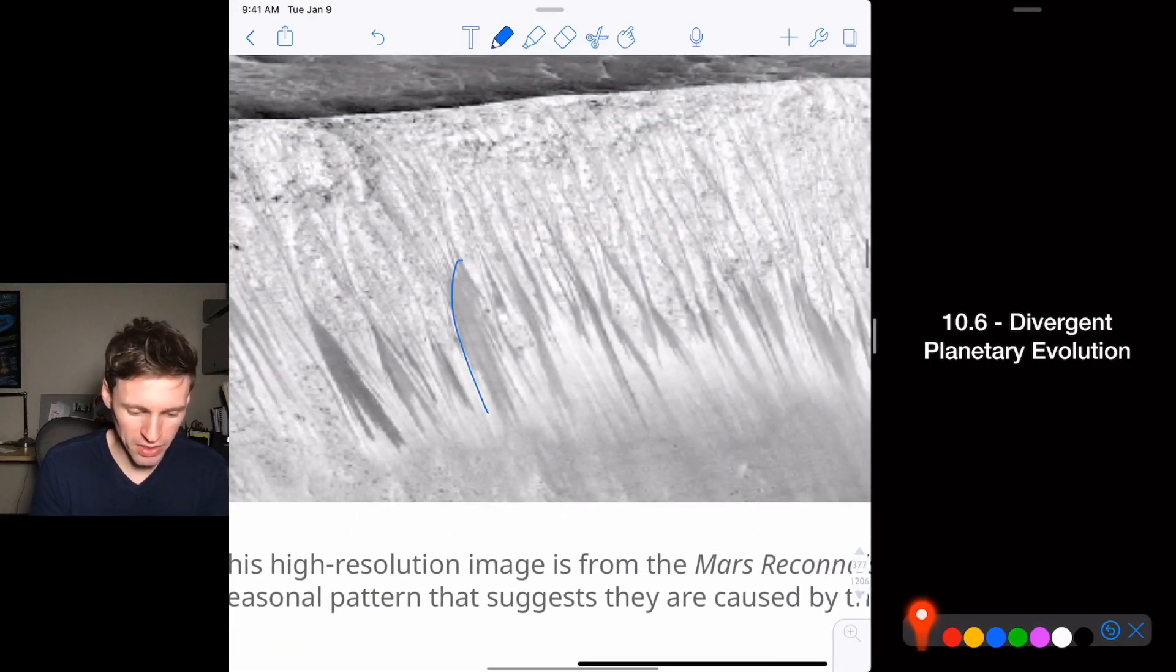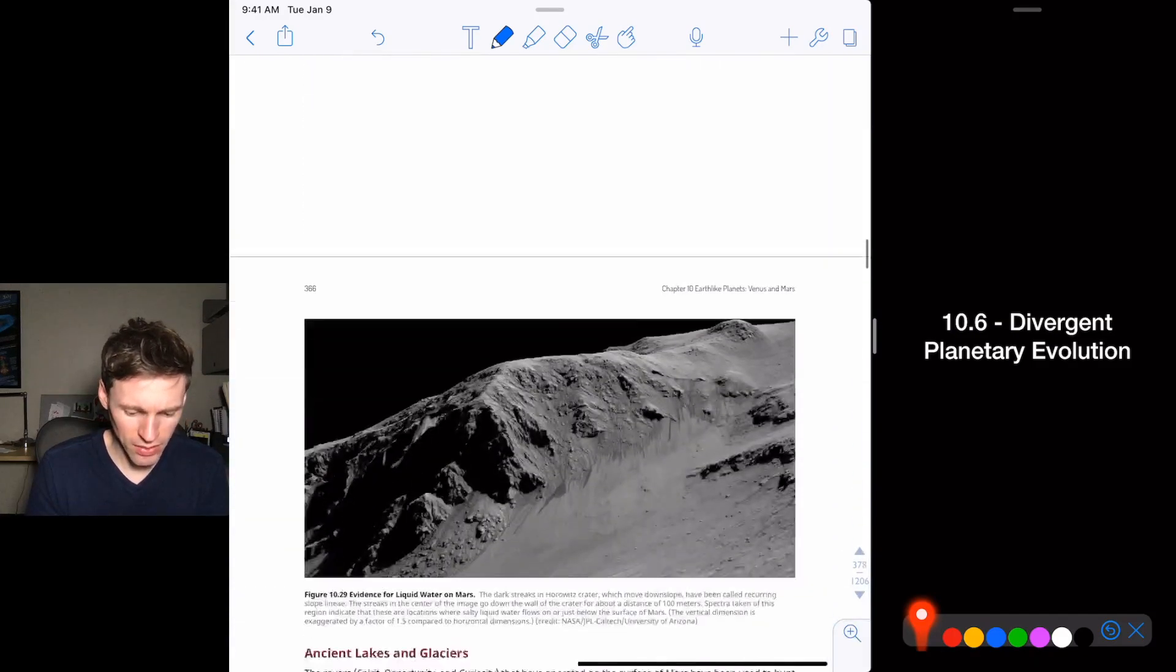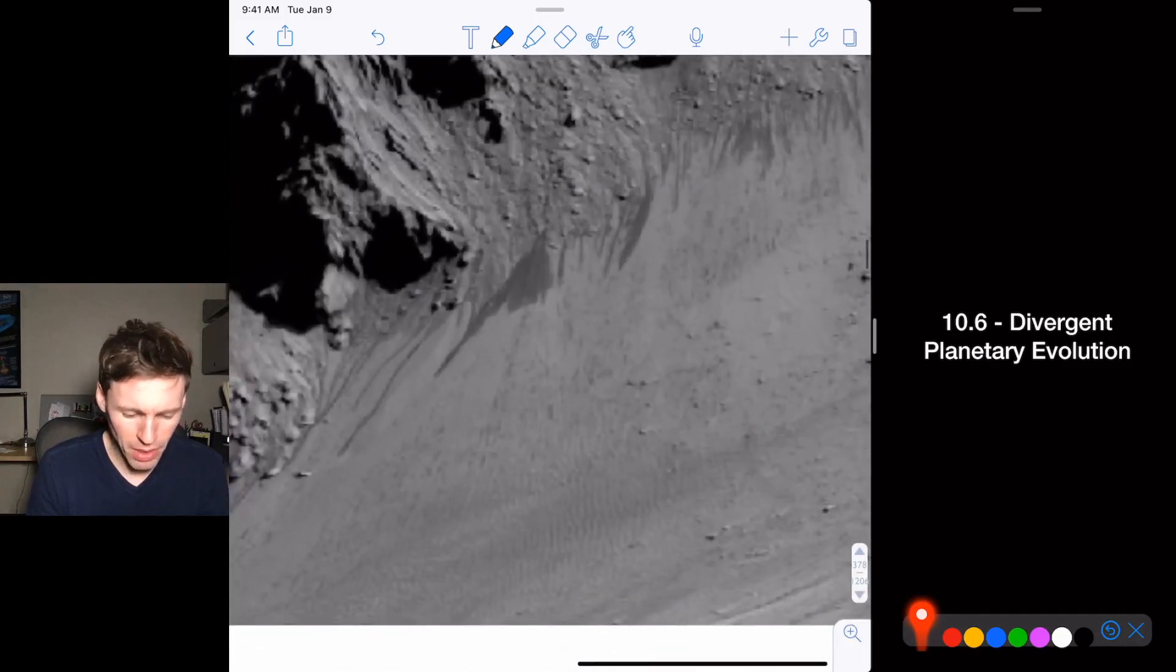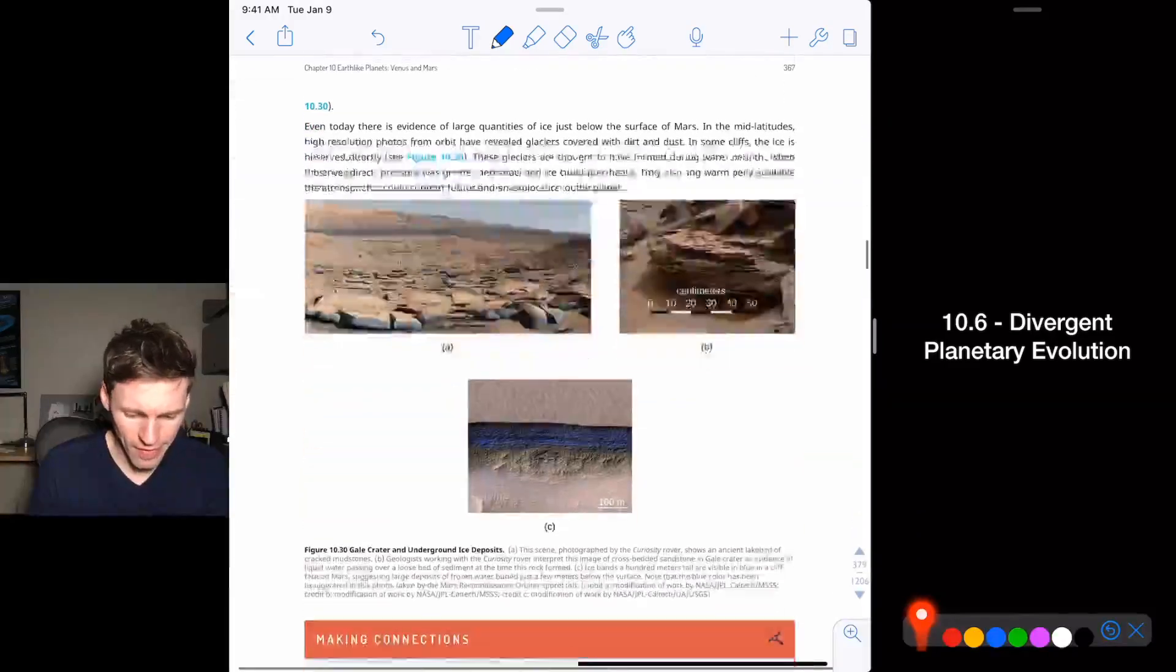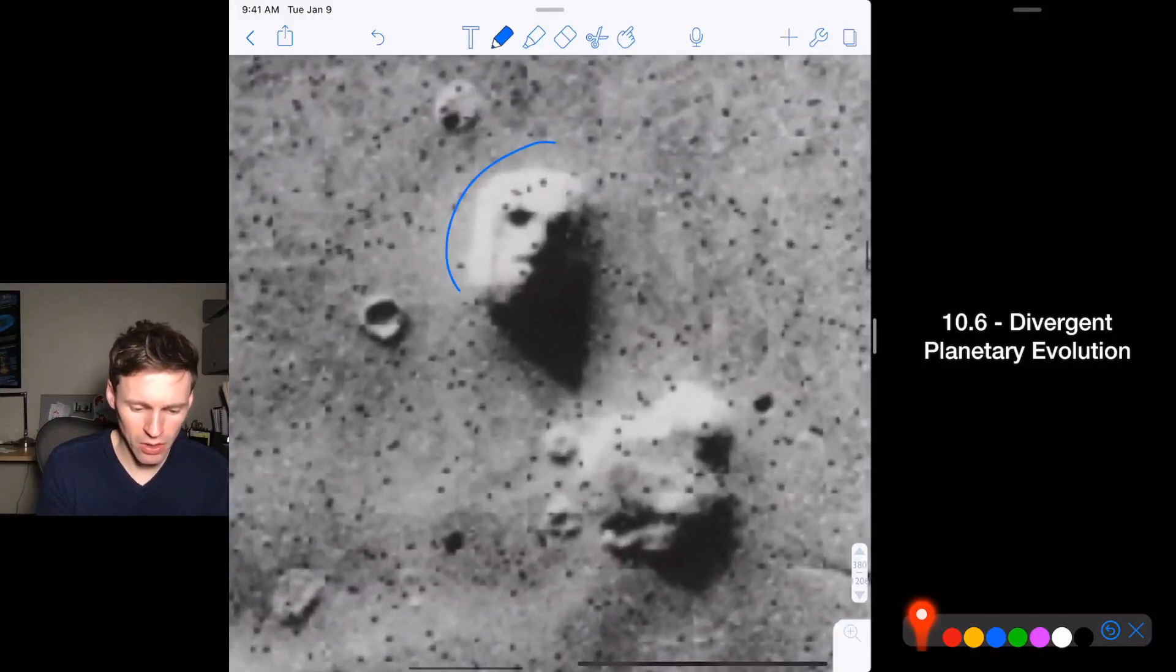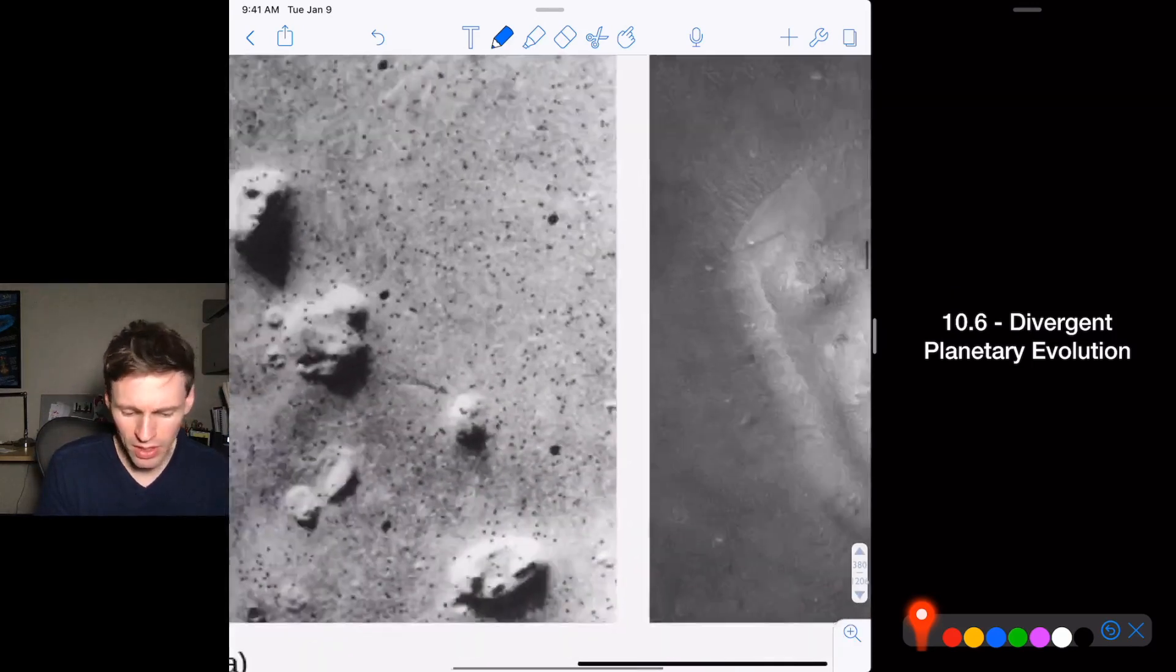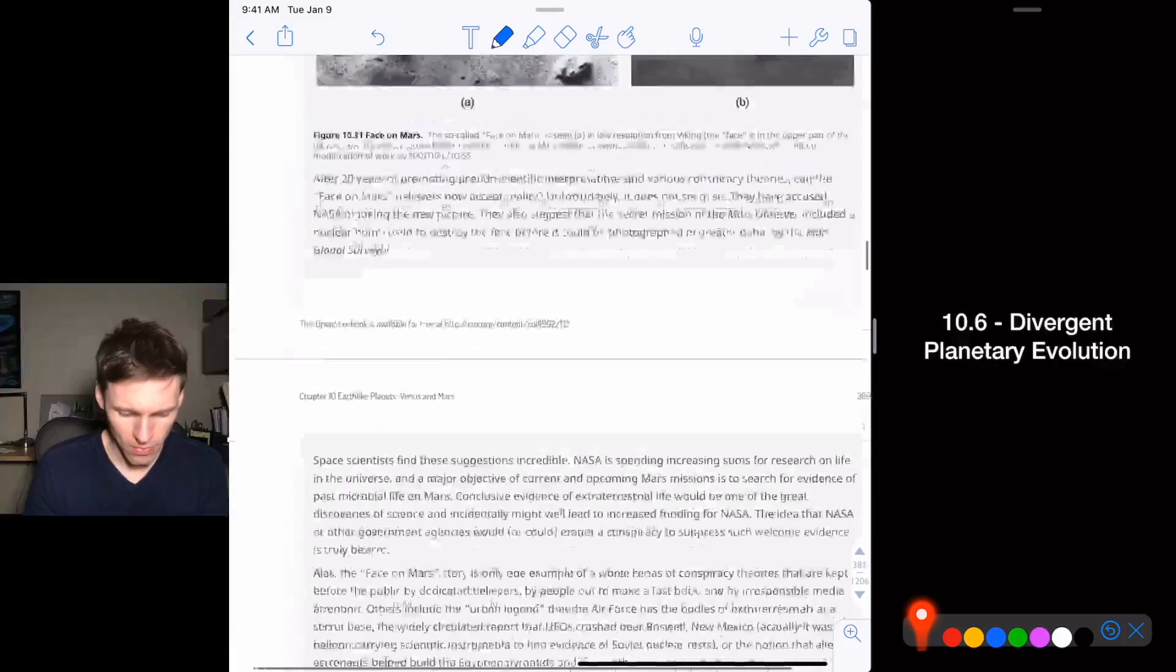When it melts, it streams, these dark areas, it streams down. And that's just kind of amazing. More liquid water. It melts and creates these dark streaks during the summer. So we definitely know that there's water on Mars. This is cool. There's this famous picture that was like, oh, there's Martians on Mars, and they made this sculpture, and they took another picture of it, and it's just a blob.